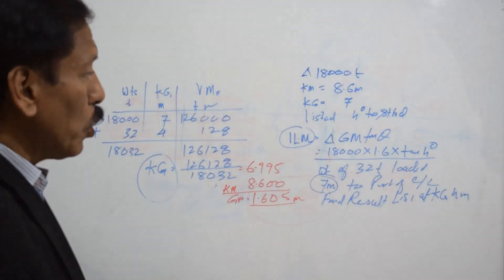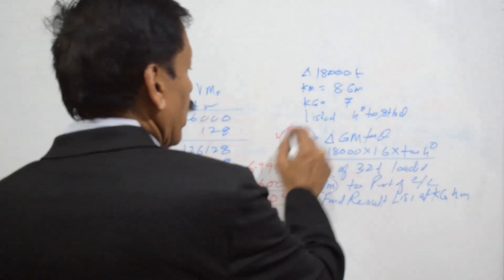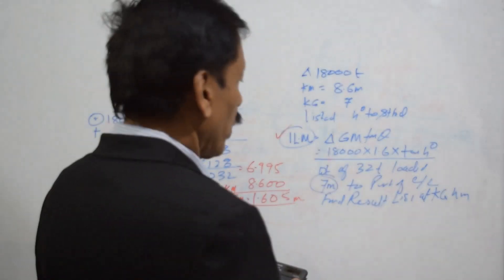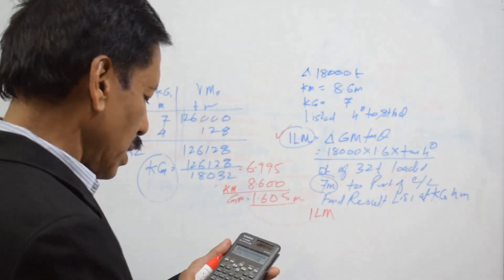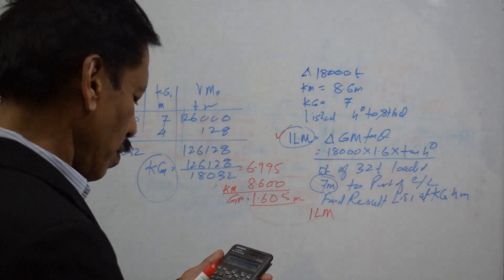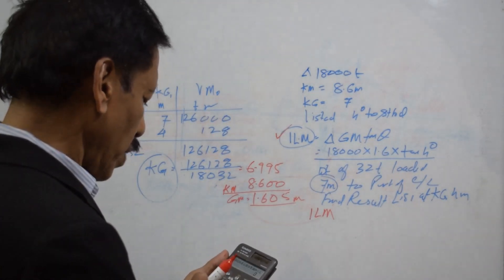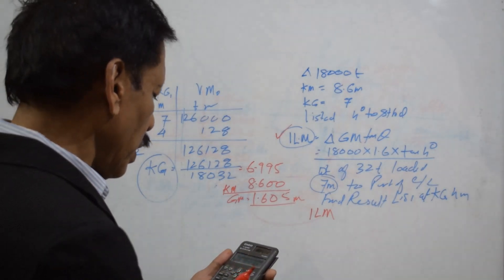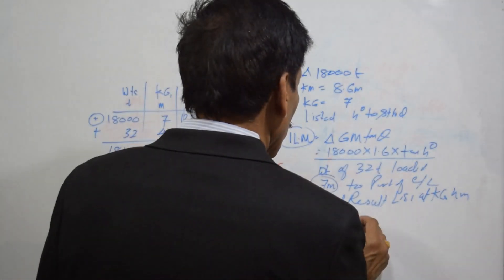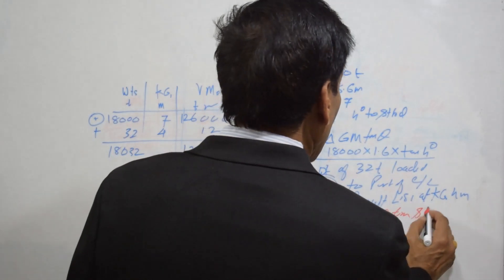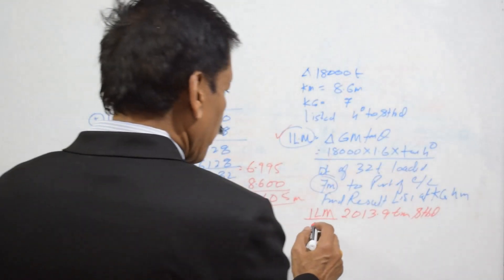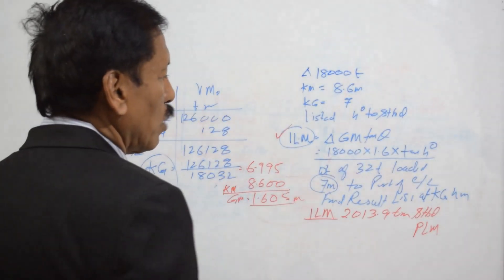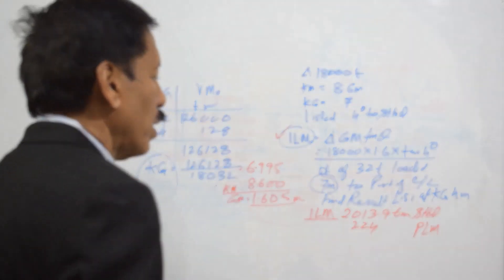As mentioned, one of the first things you do when you look at a listed ship is use the formula — listing moment equals delta·GM·tan theta — to find out the initial listing moment. So initial listing moment is 18,000 into 1.6 into tan of 4 degrees, which gives 2013.9 ton-meters. We have then loaded a weight of 32 tons, 7 meters to port, so the port listing moment is 32 multiplied by 7, which is 224 ton-meters.